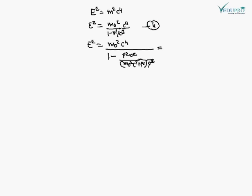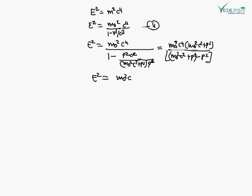After simplification, the equation becomes E² = m₀²c⁴ + p²c². This is the relation between energy and momentum in special relativity.